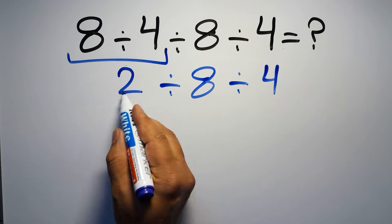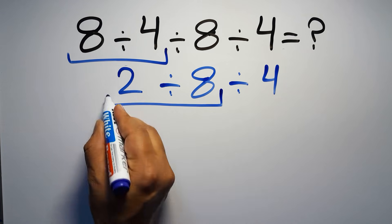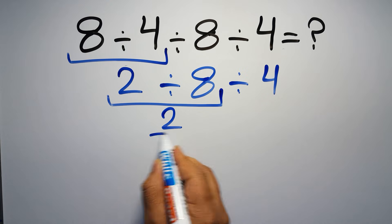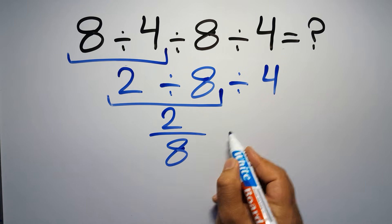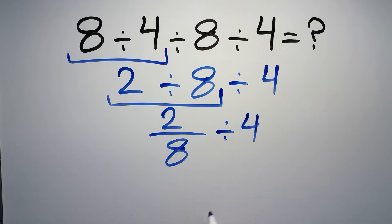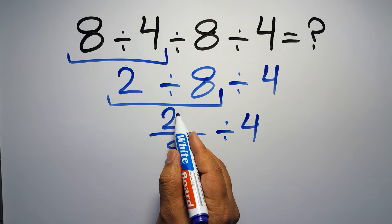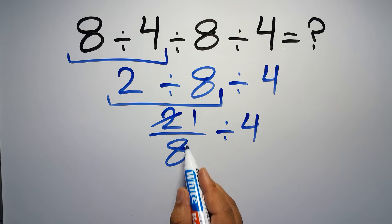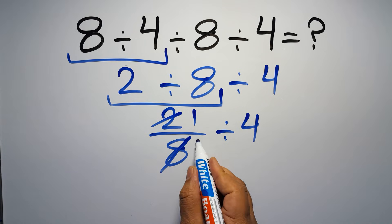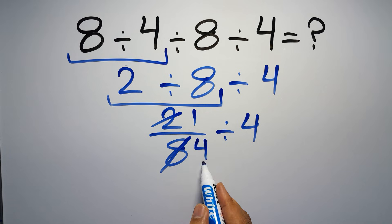now we have to do this division, 2 divided by 8 can be written as 2 over 8, then divided by 4. 2 divided by 2 gives us 1, and 8 divided by 2 gives us 4, so 1 over 4 divided by 4